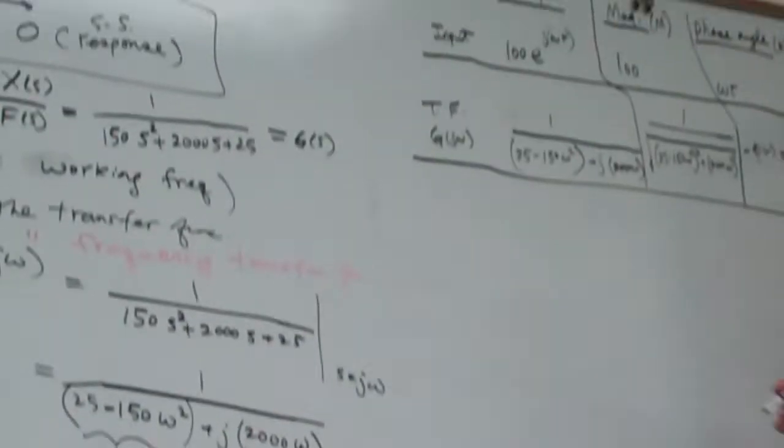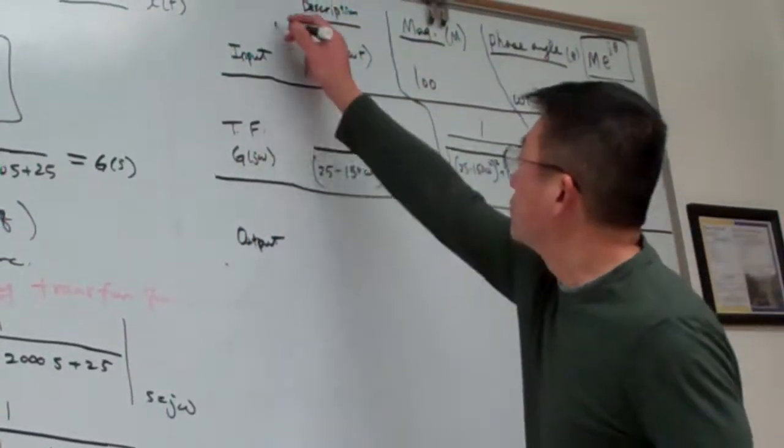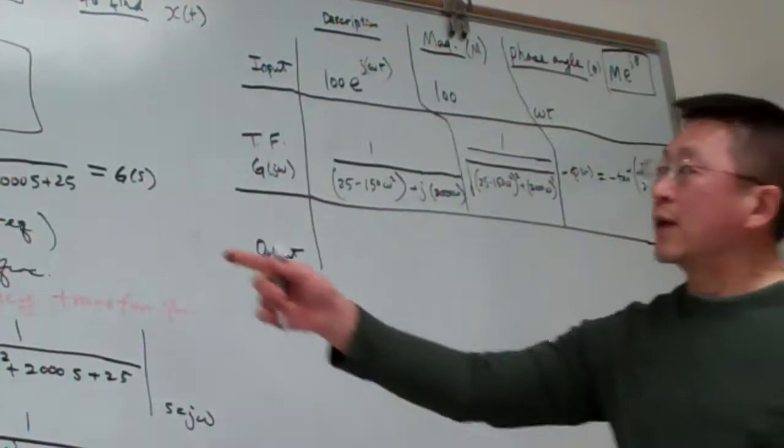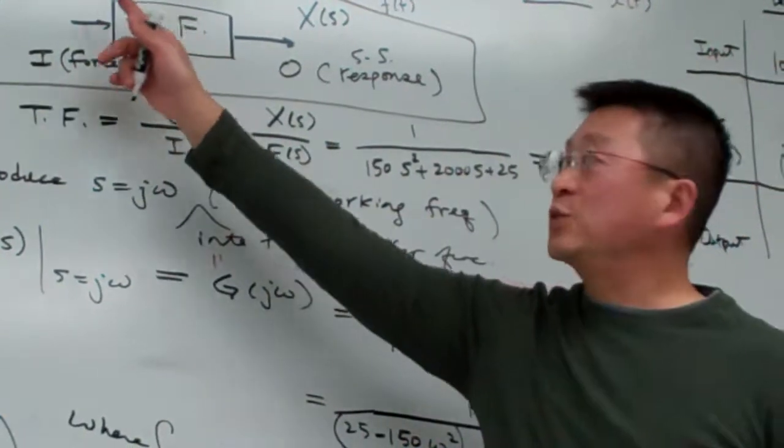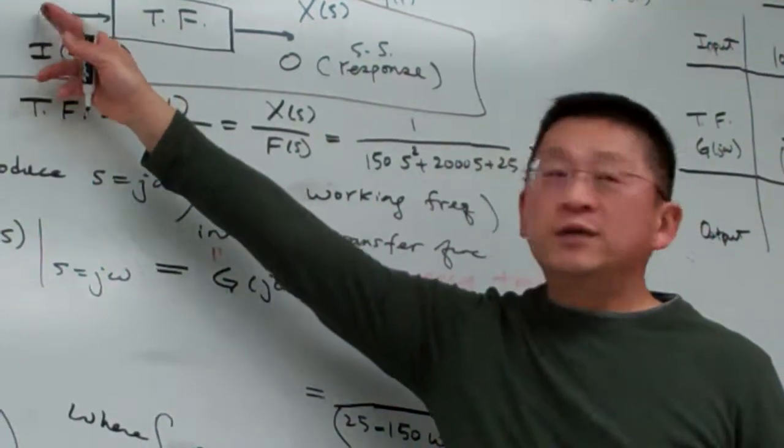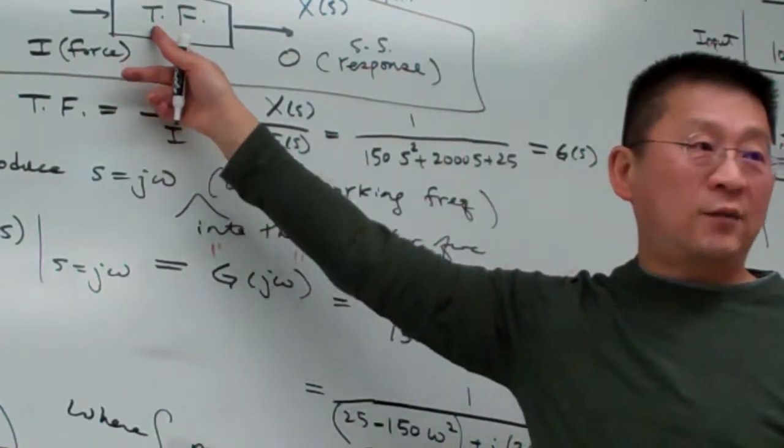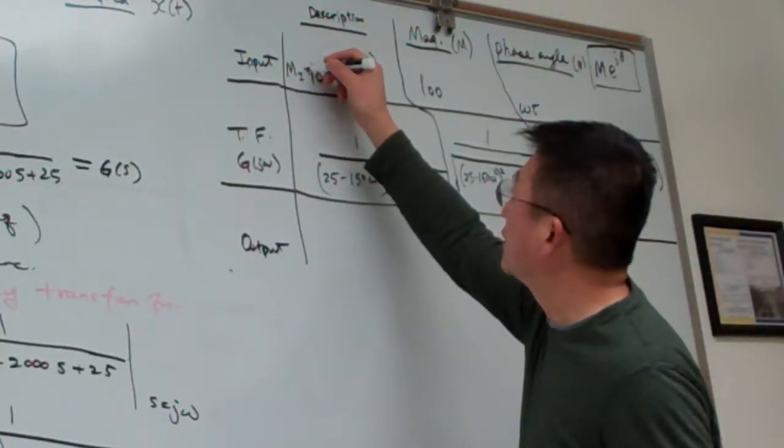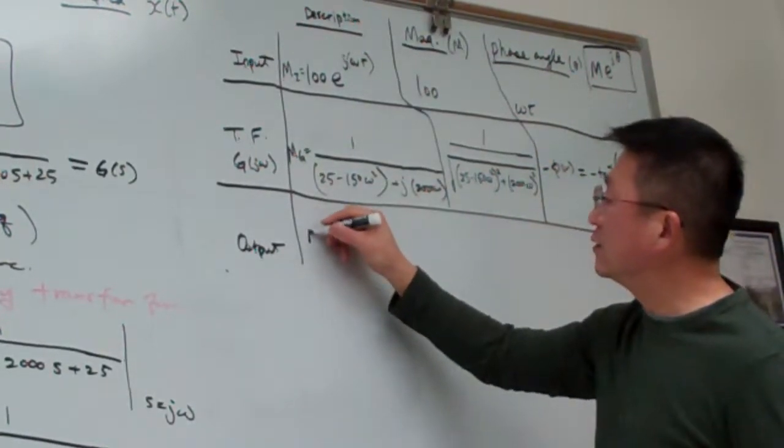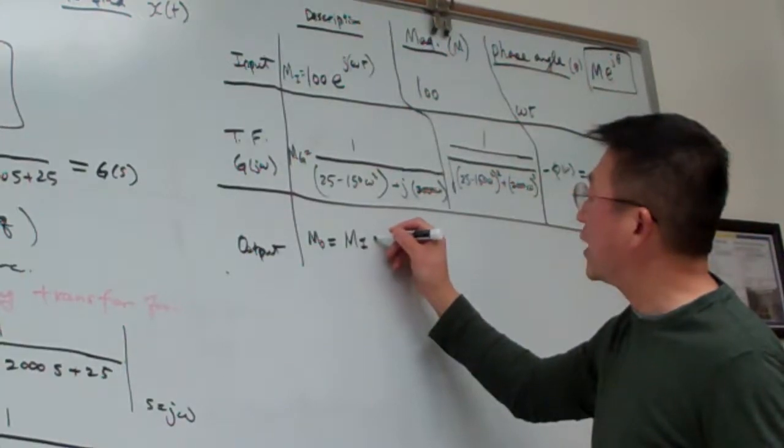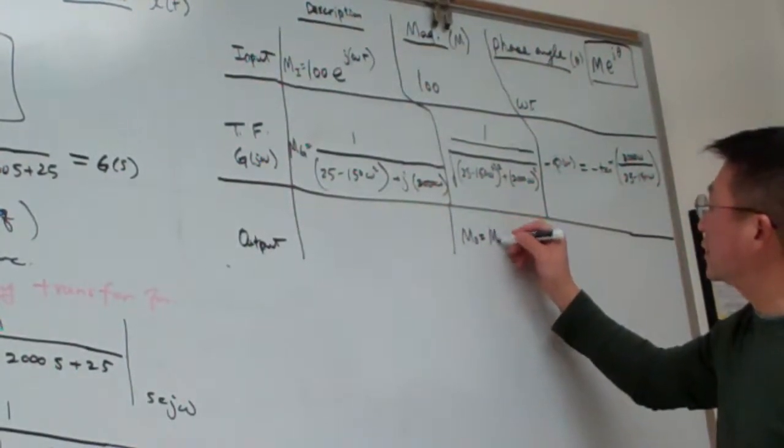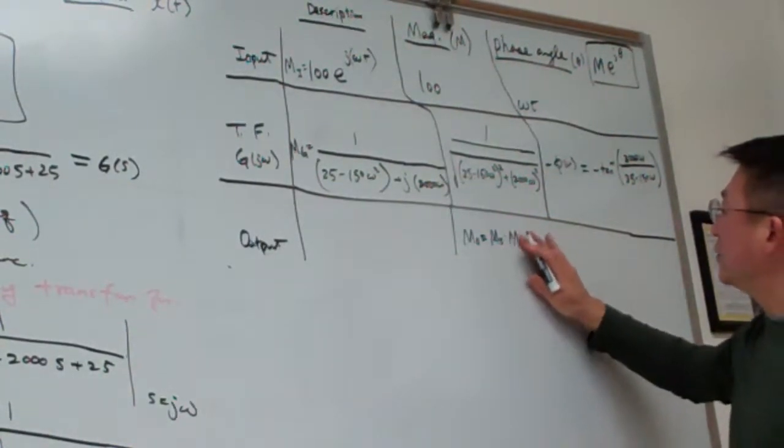And then this is our output. So again, output. We follow up this one. Output equal to transfer functions multiplied with input. And right now the input is a complex number. Transfer function is a complex number. So we know that for multiplication of two complex numbers is such that their magnitude multiplied to each other. So that means, let me say this is the mi and this is called the mg. So basically, output is equal to mi multiplied with mg. So mo is equal to the magnitude of the input multiplied with the magnitude of the mg.